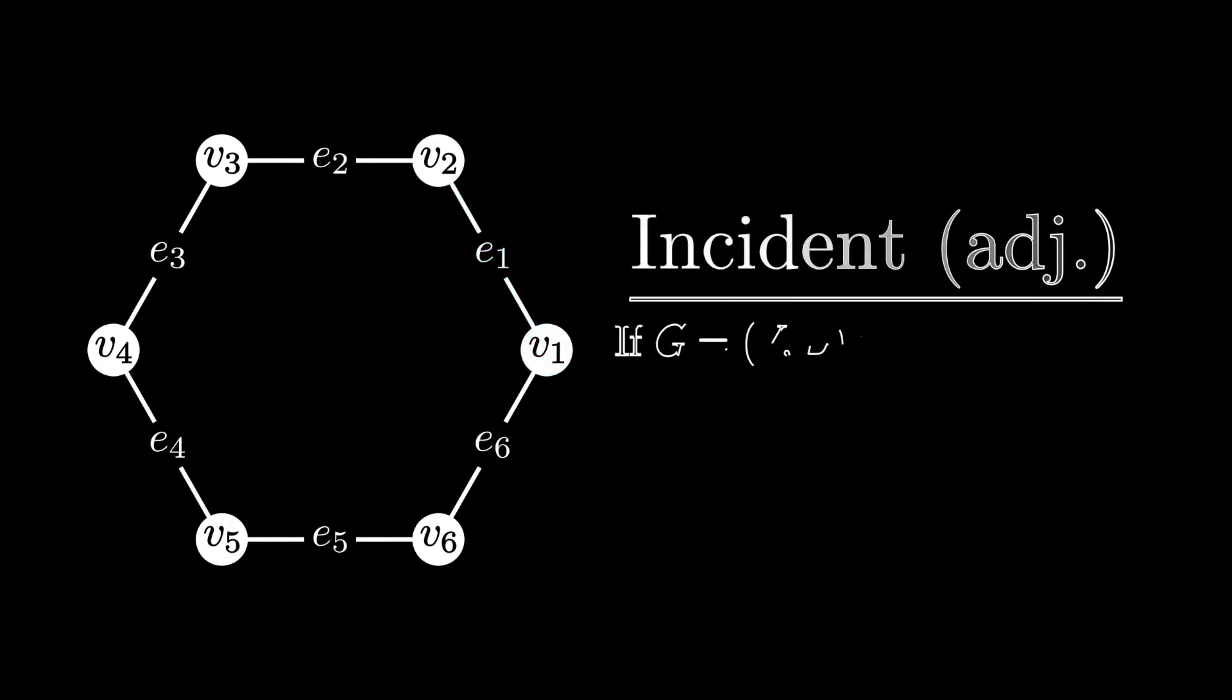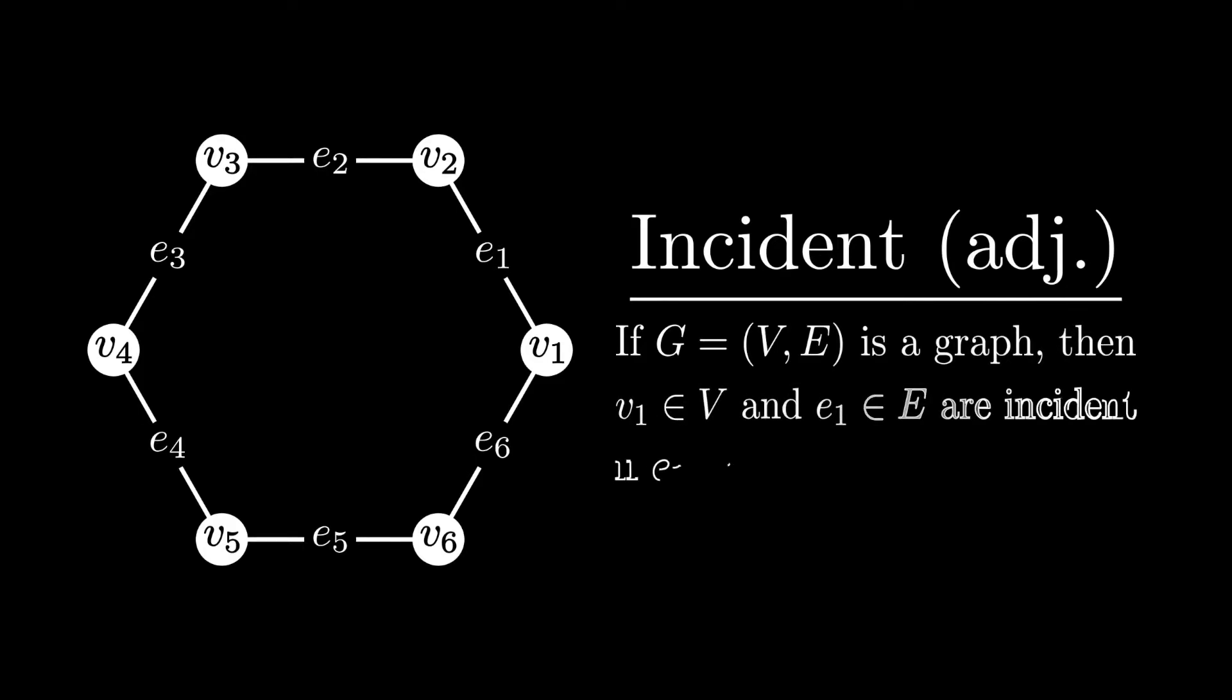More generally, if g is a graph, and v1 is a vertex, and e1 is an edge, then we say these are incident if e1 is comprised of v1 and some other vertex.